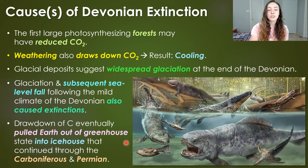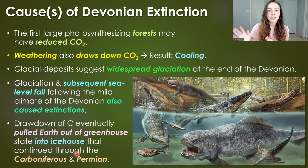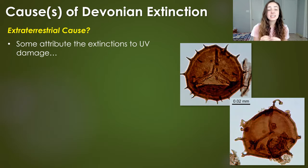The continued drawdown of carbon and CO2 from the atmosphere pulled Earth out of a greenhouse climate and into an icehouse climate that continued through the Carboniferous and Permian. But cooling, glaciation, sea level fall, and anoxic bottom waters may not have been the only things to cause mass extinctions during the end of the Devonian period.